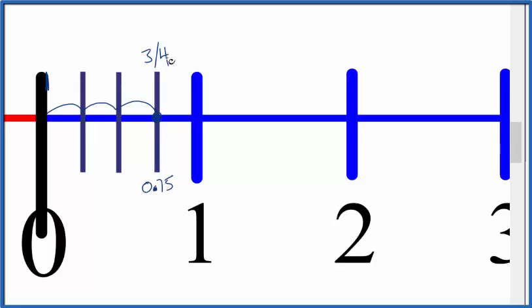That's it. That's how you find 3 fourths on a number line. This is Dr. B. Thanks for watching.